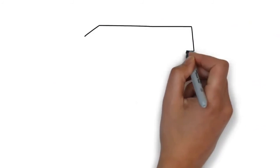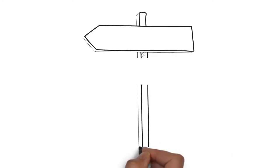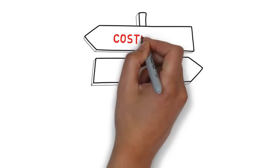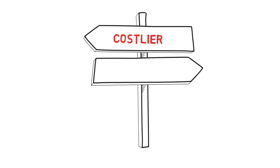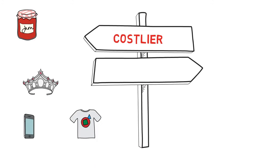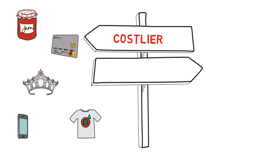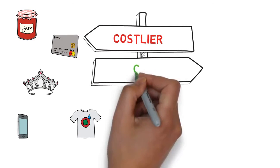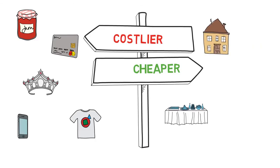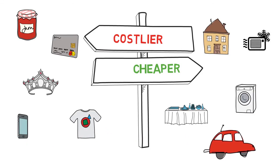After applying GST, the cost of items will either increase or decrease. Items whose cost will increase include packaged food, jewelry, ready-made garments, mobile services, and credit card services. Items whose cost will decrease include homes, restaurants, AC, washing machines, microwave ovens, small cars, and there will be less taxes on industries.